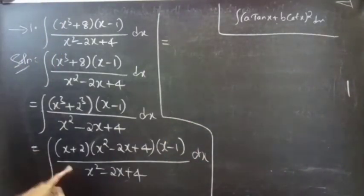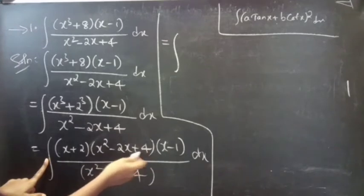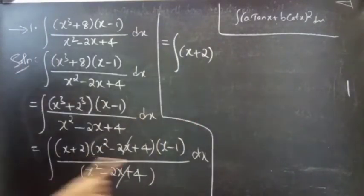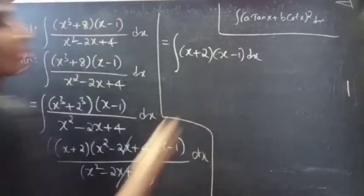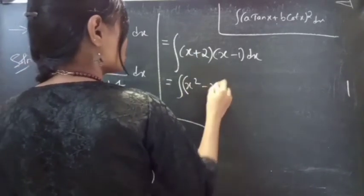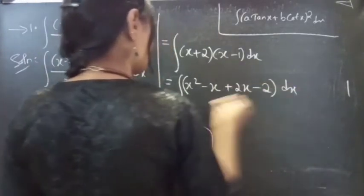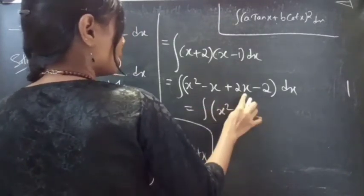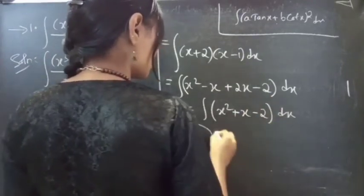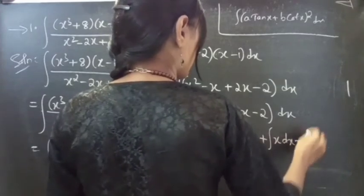We can cancel (x² - 2x + 4) from the numerator and denominator. Finally we get the integral of (x + 2)(x - 1) dx, which expands to the integral of x² + x - 2 dx. We can write this as ∫x² dx + ∫x dx − ∫2 dx.